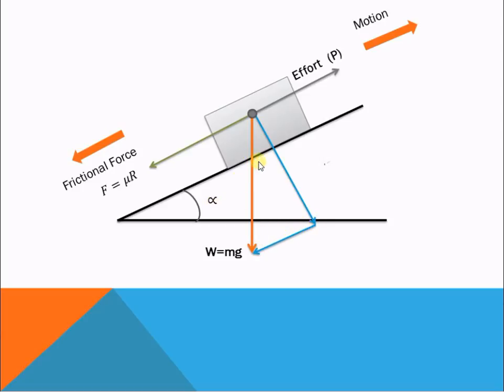If this angle is α, this angle is also α. Therefore, this component is mg cos α, and the opposite component is mg sin α.